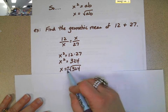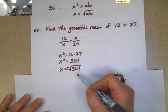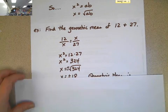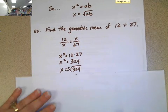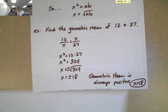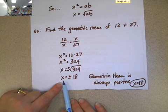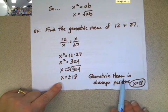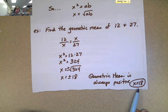Again, I could have the plus or minus here, but because we're talking about it's always positive, we don't really need that there. So, plus or minus 18, but because geometric mean is always positive, we have an answer of 18.